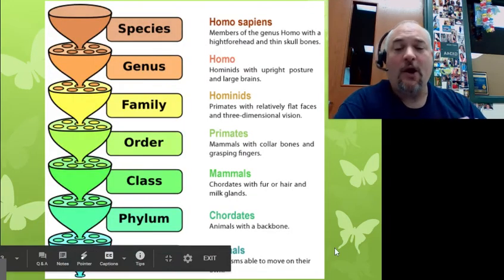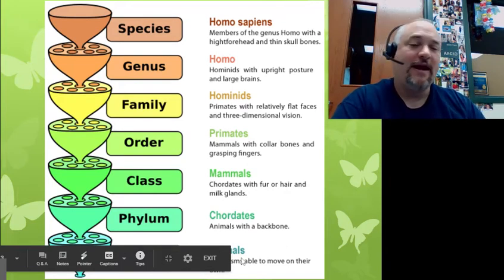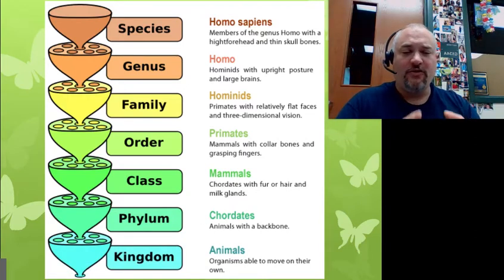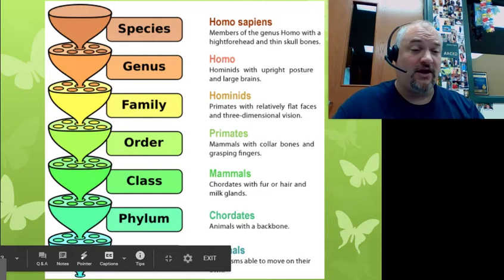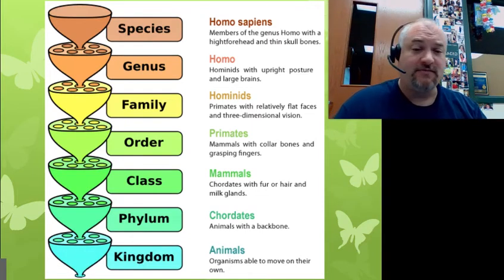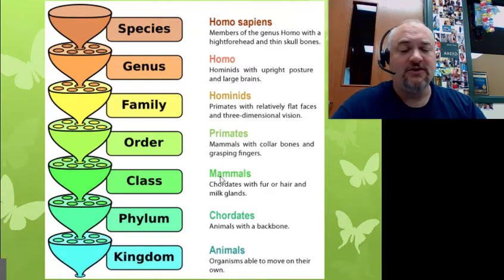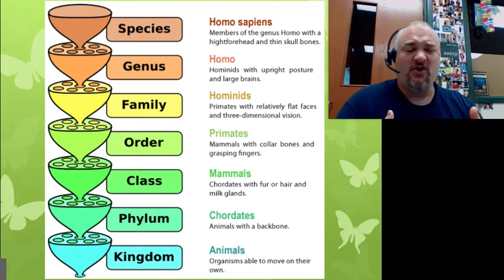Here we have our taxonomic breakdown. Our kingdom — we're animals, like we said before. Our phylum: we can take animals and break them down into smaller phyla; one of those is chordates, meaning we have a spinal cord — as opposed to things that don't, like worms or insects, which are animals too but have no spinal cord and are in a different group. Within the chordates, we can break those down into a class; we belong to the class Mammalia, or mammals, as opposed to reptiles, birds, and amphibians. Mammals: fur, milk to our young, that sort of thing.